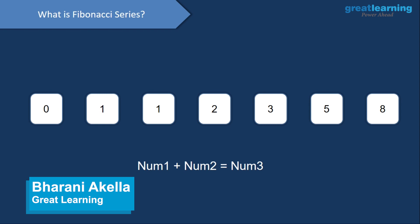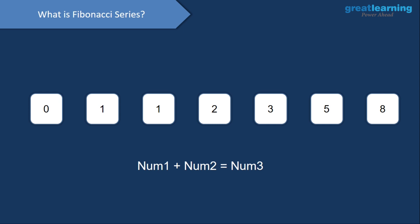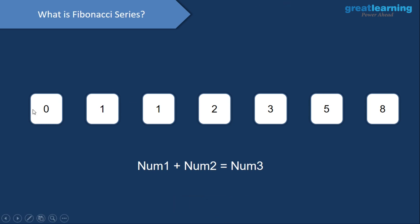So what exactly is this Fibonacci series? When you were in high school or primary school you would have come across this series. In the Fibonacci series you have your first two numbers fixed, which are 0 and 1. When you add the previous two numbers you get the next number. So 0 plus 1 gives 1, then 1 plus 1 gives 2, then 2 plus 1 gives 3, then 3 plus 2 gives 5, then 5 plus 3 gives 8, then 8 plus 5 gives 13. This is how the Fibonacci series progresses.